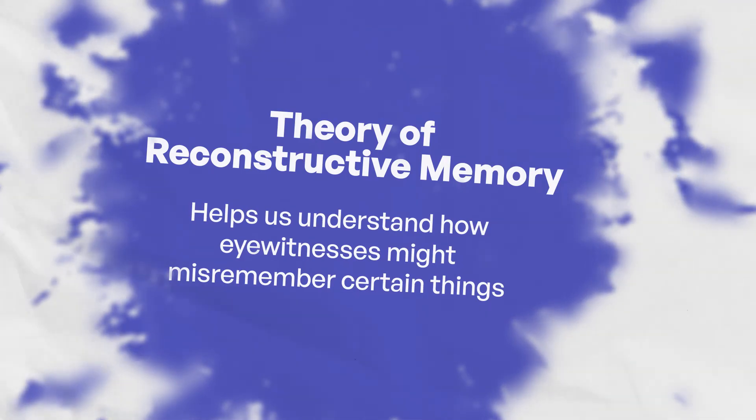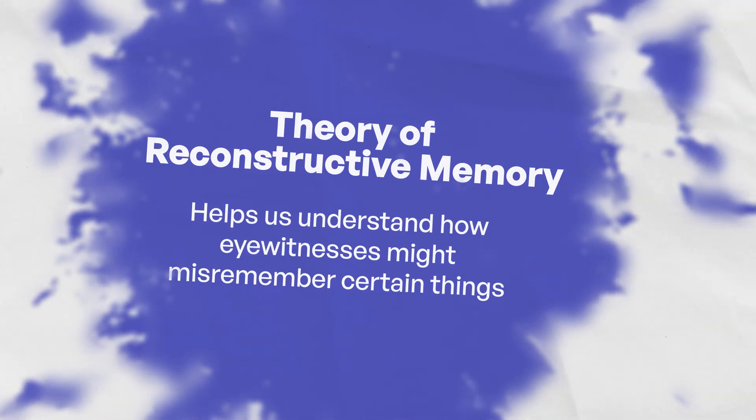An eyewitness might have a schema that all criminals are male — and when she recalls seeing a thief steal a phone, she remembers the thief being male, not female. This doesn't mean the eyewitness was deliberately lying, just that schemas can lead to memories becoming distorted.